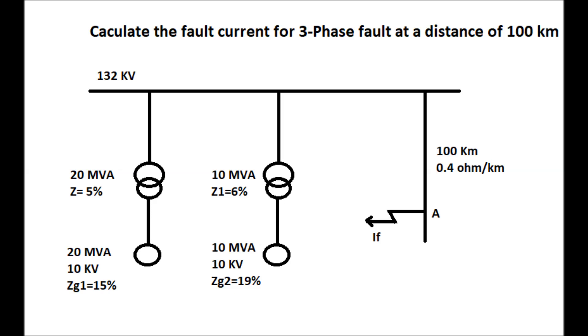It has two transformers operating at 20 MVA and 10 MVA respectively, and their percentage impedance is 5% and 6% respectively. A fault occurs from the substation at a distance of 100 km at point A.